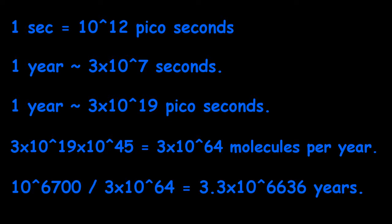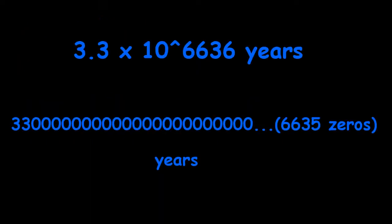One second equals 10 to the 12 picoseconds. One year equals 3 times 10 to the 7 seconds. One year equals 3 times 10 to the 19 picoseconds. 3 times 10 to the 19 times 10 to the 45 equals 3 times 10 to the 64 molecules per year. 10 to the 6700 divided by 3 times 10 to the 64 equals 3.3 times 10 to the 6636 years. To list all combinations of a protein of 5000 nucleotides we need 3.3 times 10 to the 6636 years, number with 6637 digits.